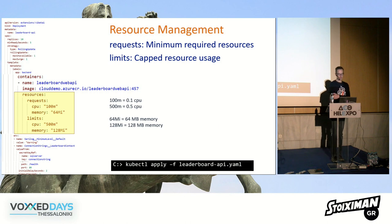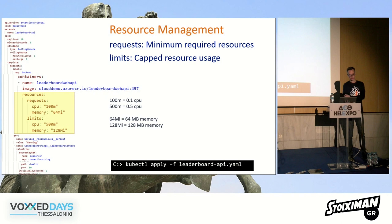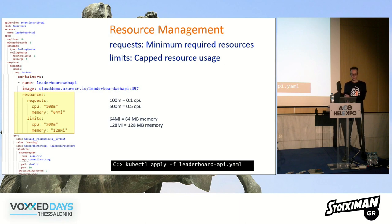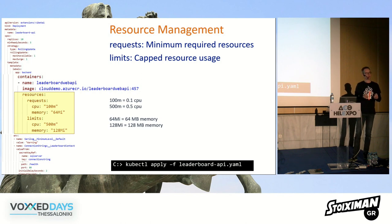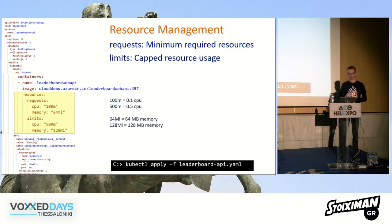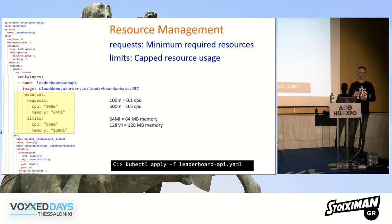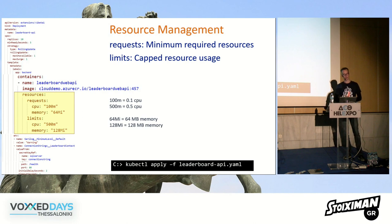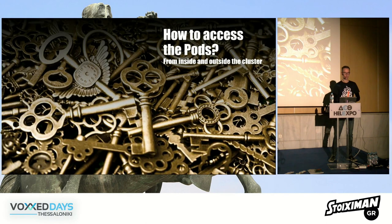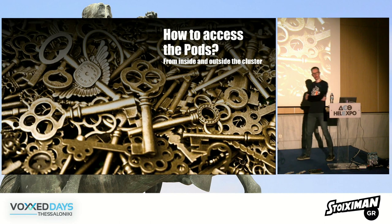Another best practice: specify the minimum and maximum resource requests and limits — both CPU and memory — in your deployment file. Once you've done this, you can use the next level: the Horizontal Pod Autoscaler (HPA). I can't show it due to time, but the HPA automatically scales the number of replicas based on load, instead of us manually changing the replica count. To use the HPA, this resource management configuration is required.